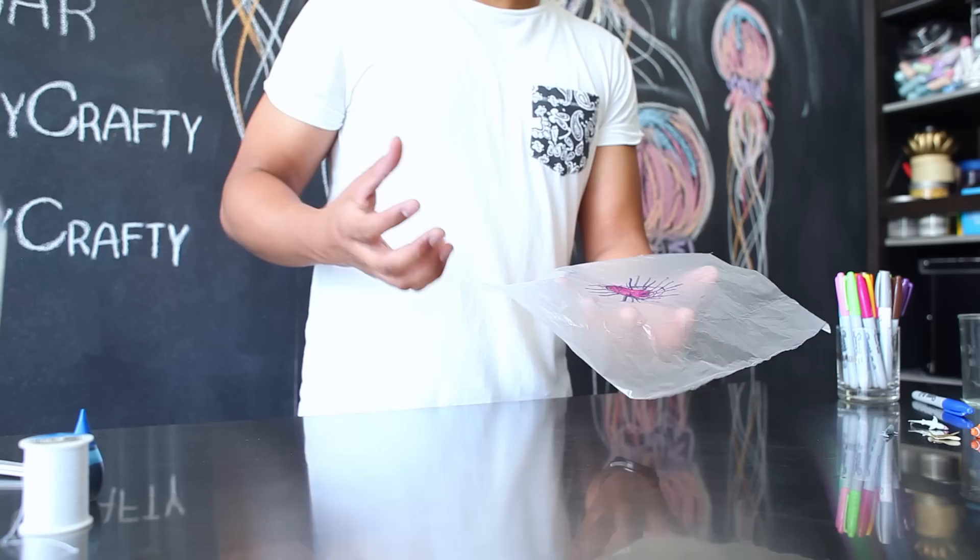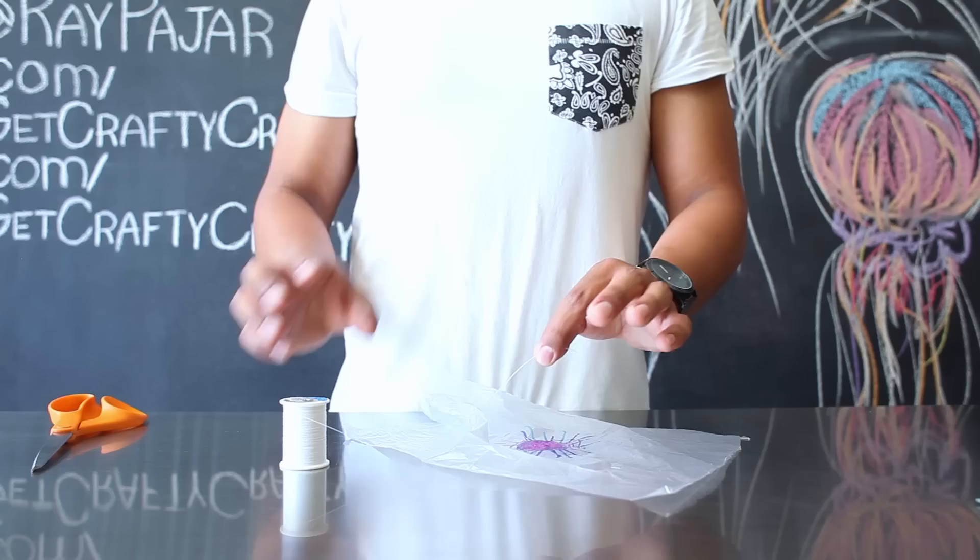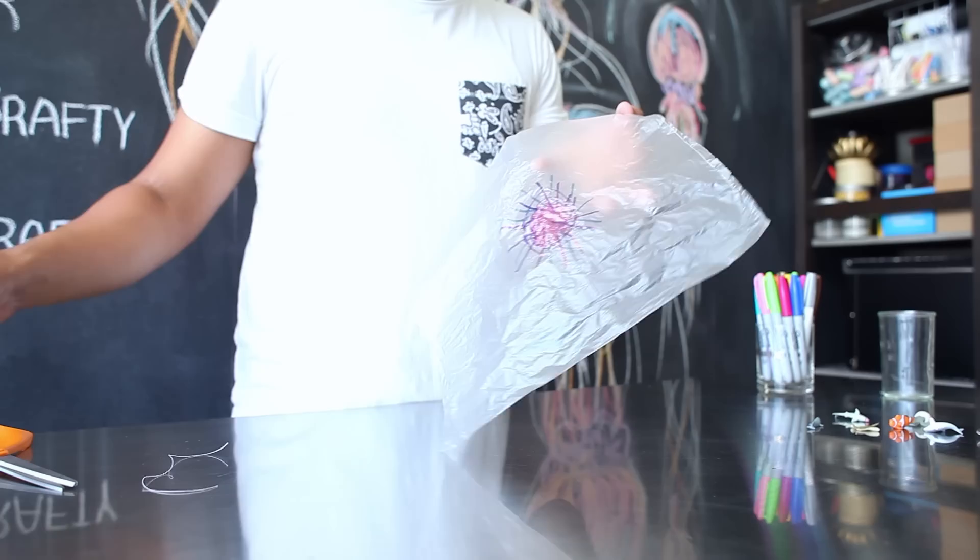Before we fill our plastic bottle with water we're going to fill up our jellyfish head with water so that'll be easier to actually put inside our water bottle. Take about six inches of your string or thread, cut it off, and then set it aside.